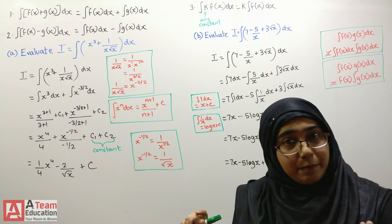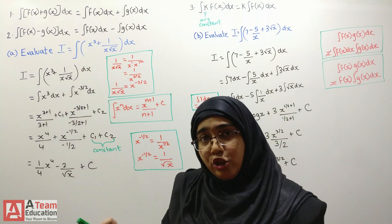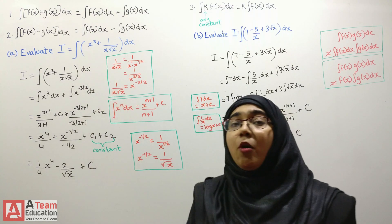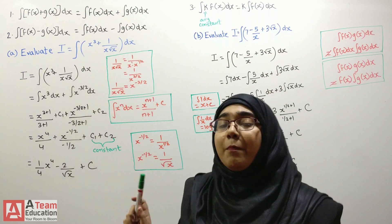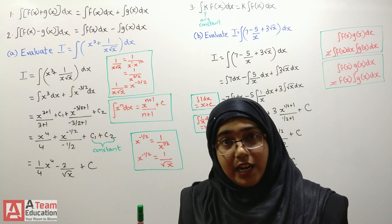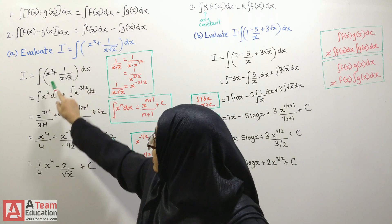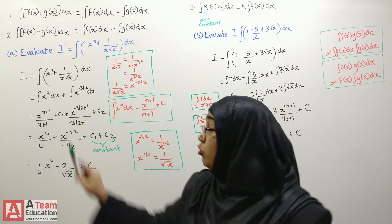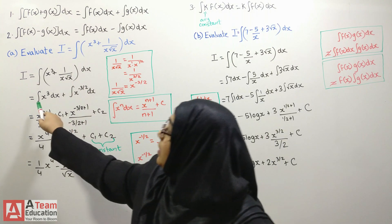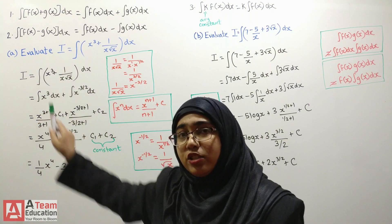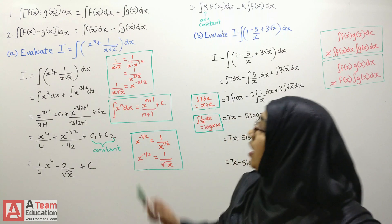A simple example of this: I have one function which is x cubed, and another function which is 1 over x root x. I have two functions under one integral sign. What I can do is integrate them separately — find the integration of x cubed and the integration of 1 over x root x.